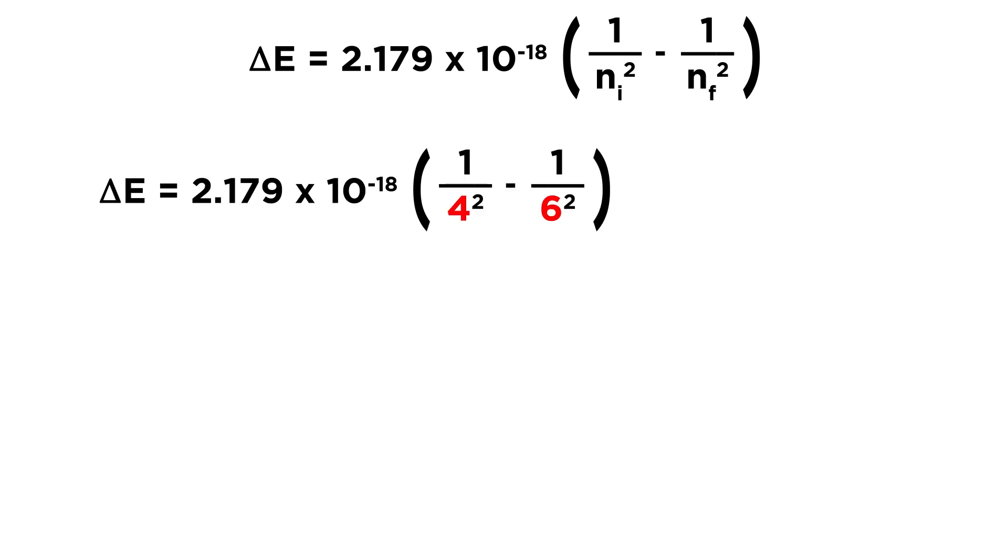We need to plug in 4 and 6, because we started at n = 4 (that's n_i), and we ended at n = 6 (that's n_f). We plug those in, and we're ready to calculate.